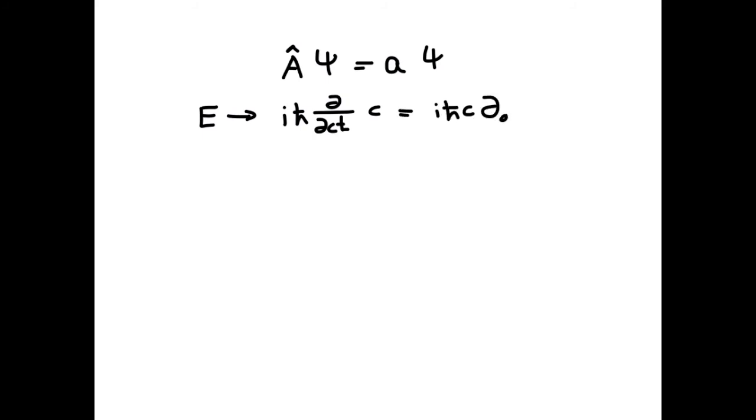where the derivative is taken with respect to the zeroth component of the space vector, which is ct. We also replace the momentum by its operator, which includes the derivative with respect to the spatial coordinates.